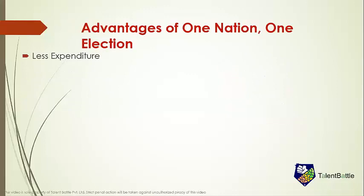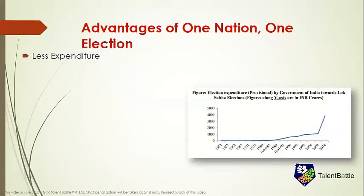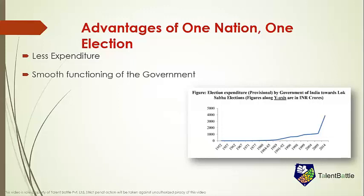What are the advantages of one nation one election? Less expenditure. The one nation one election will help to save a huge amount of money. There are about 4120 MLAs in 31 states and union territories. Conducting elections separately costs around hundreds of crores each time. A considerable amount of money is spent on the arrangements, salaries, and securities. The graph shows the increasing amount of expense on elections over the years.